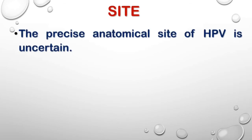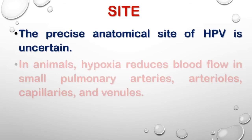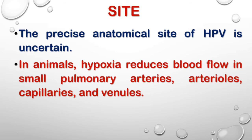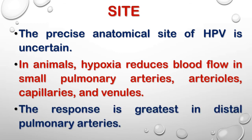The precise anatomical site of HPV is uncertain. In animal studies, hypoxia reduces blood flow in the small pulmonary arteries, arterioles, capillaries, and venules. The greatest response, however, is in the distal pulmonary arteries.